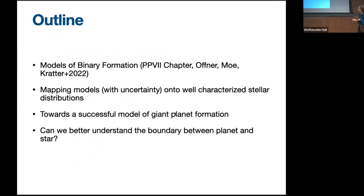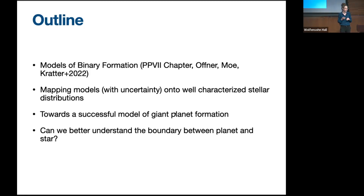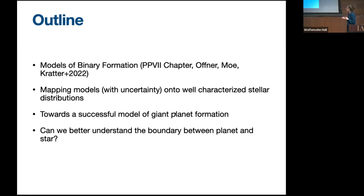I'll begin by talking about models of binary formation in general, giving a broad brush overview and highlighting interesting pieces of the theoretical understanding. This is mostly coming from a recent PP7 chapter led by Stella Ofner, with observational statistical heavy lifting from Maxwell Boe. I'll then talk about connecting these theoretical models to better-characterized stellar distributions, connecting with models for giant planet formation, and finally revisiting the boundary between stars and true planetary objects.